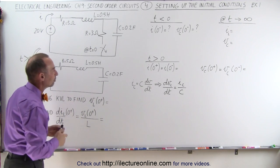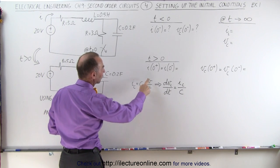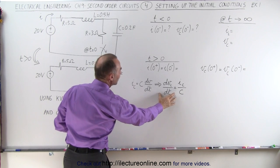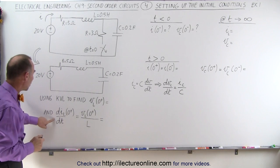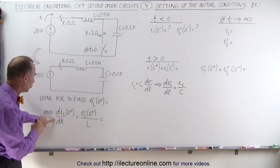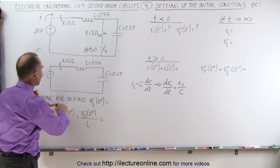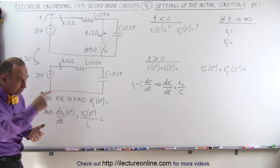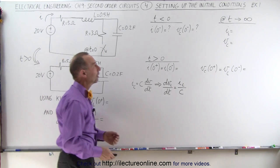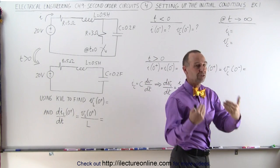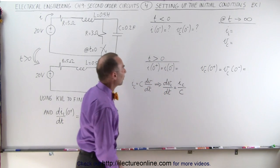During the transient period, we want to find the current, which is going to be the capacitance times dv/dt, so we can find dv/dt — how fast the voltage is changing across the capacitor — and how fast the current is changing through the inductor. We'll need to find the voltage across the inductor using the KVL methodology, simply going around the circuit and adding up all the voltages. At the end, when time approaches infinity, we want to find the current through the inductor and the voltage across the capacitor.